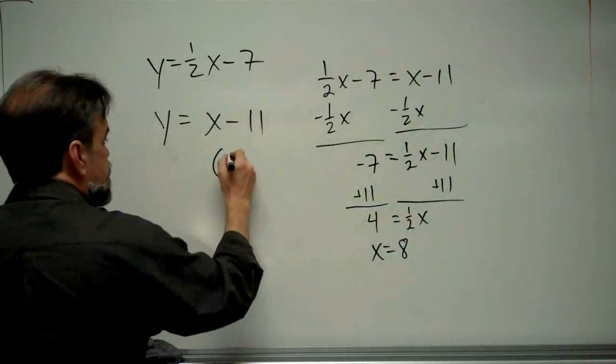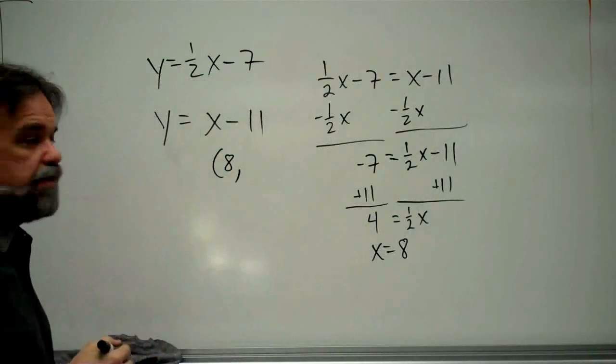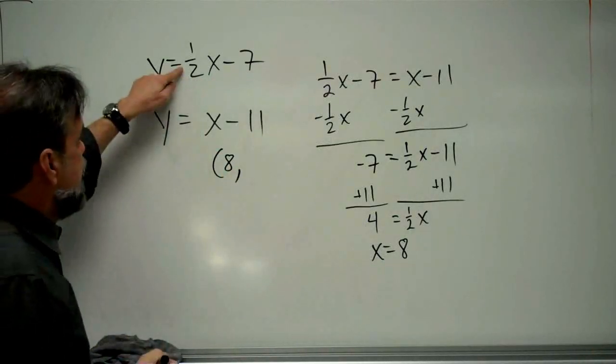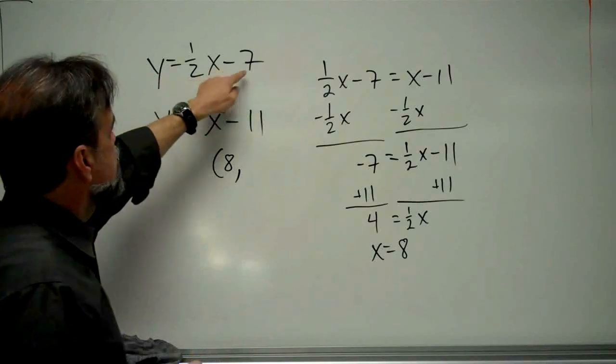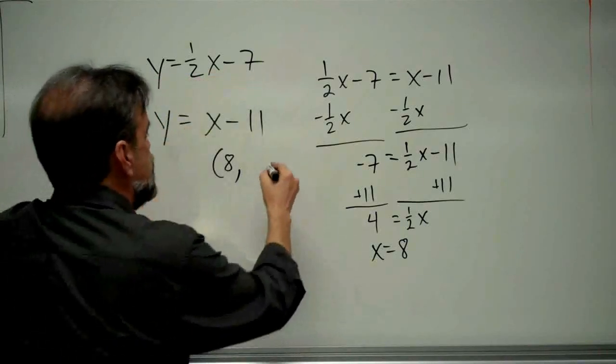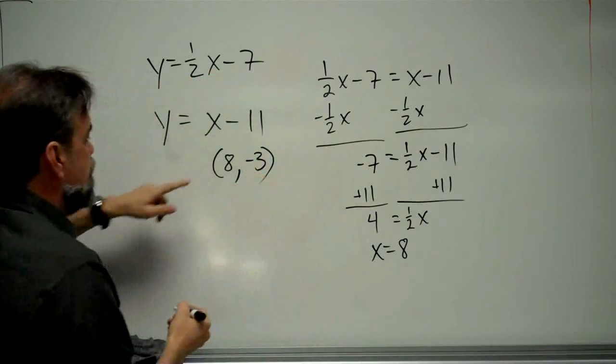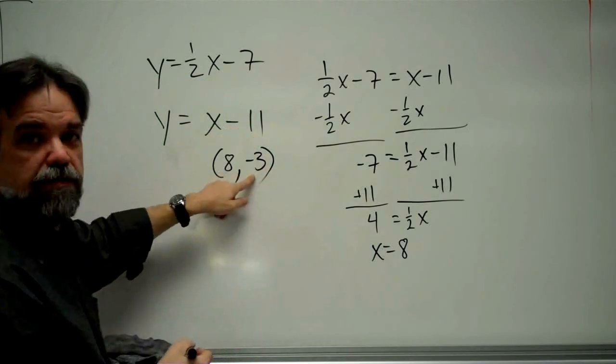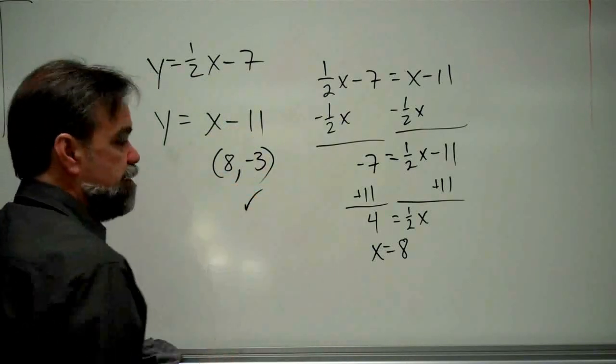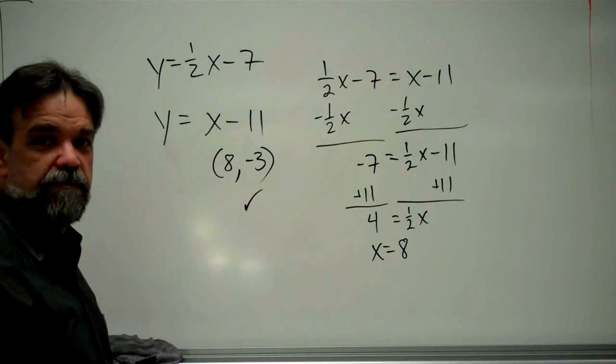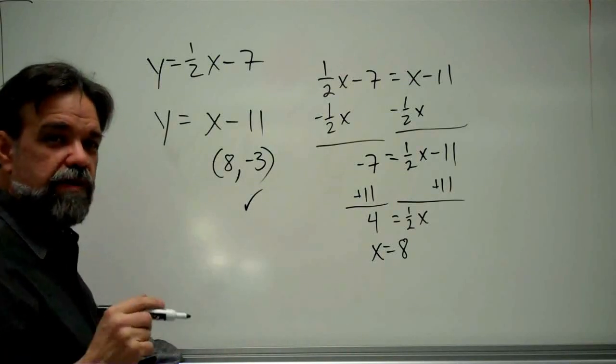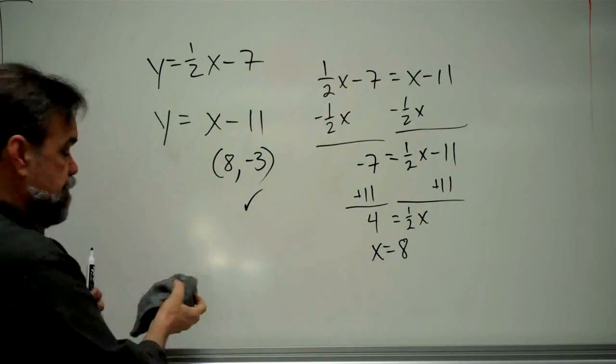Great! That means my point is 8 something. Half of 8 is 4 minus 7 is negative 3. And 8 minus 11 is also negative 3. So again, it works. Let me give you one more. And this one's going to have a little twist to it.